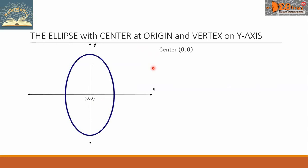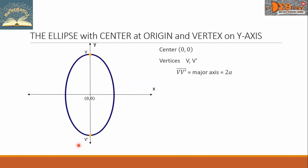Here is the ellipse. The center is at the origin with coordinates (0, 0). Let us draw the vertices. This is the first vertex denoted by v, and the second vertex is v'. Remember, the vertices are the points where the ellipse crosses the y-axis. The line segment connecting the two vertices, we call that the major axis. Let us assign this length to be 2a. So we have (0, a) for v and (0, -a) for v'.